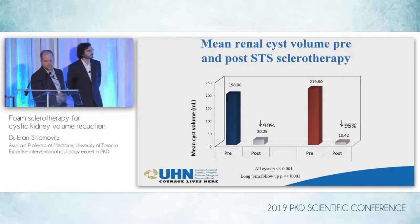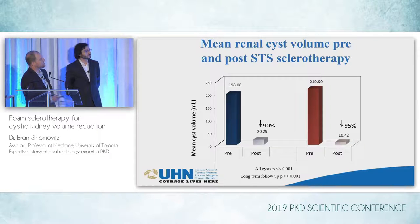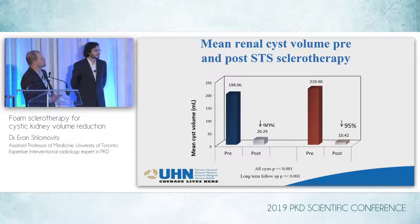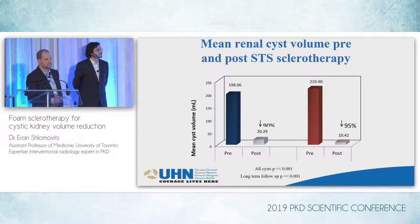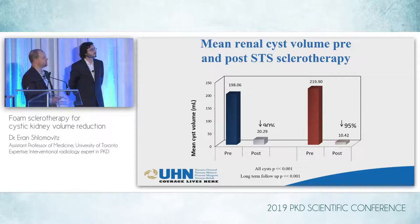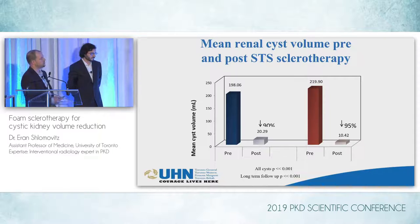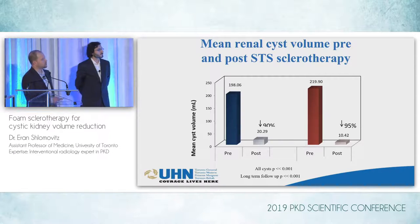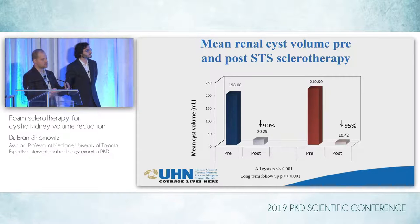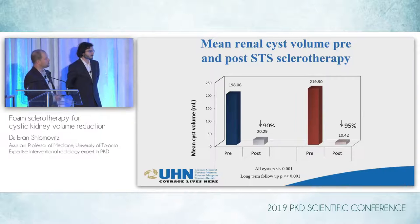This is some of our data looking specifically at cyst volume — not total kidney volume but the volume of the cyst that was treated. Across all our patients pre and post sclerotherapy, you can get about a 90% reduction in the size of the treated cyst. For patients with over a year of follow-up, the response is sustained — we have almost three years of follow-up data on some patients, and the treated cyst does not appear to reaccumulate. Obviously the surrounding cysts grow because it's a progressive disease, but the treated cyst does not appear to regrow.